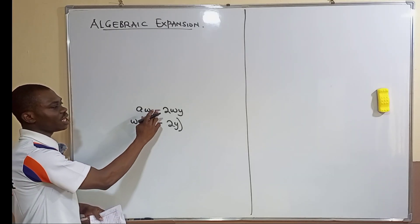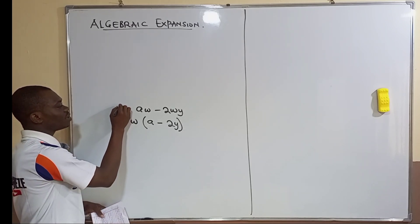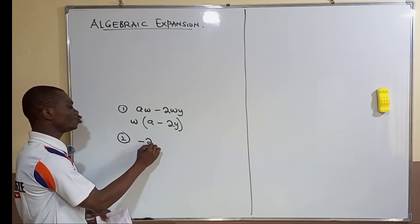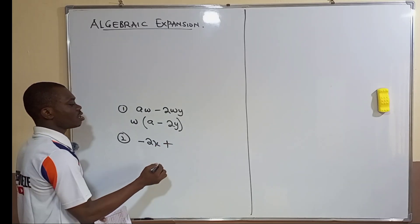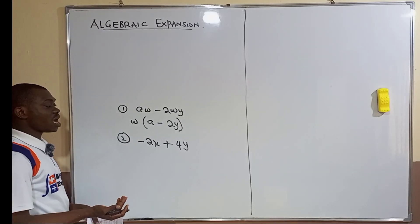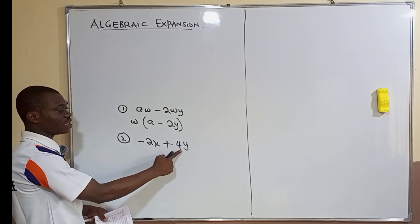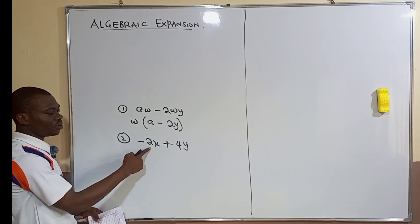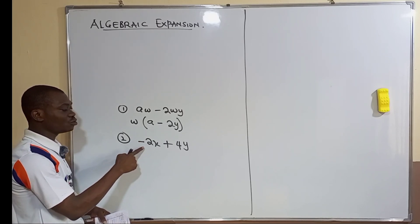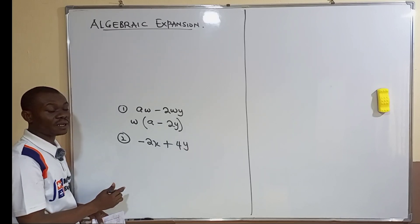Note that you bring down the sign because you're dividing by a positive common factor. Now consider another example: -2xc + 4y. Here, whether the sign is plus or minus doesn't affect identifying the common factor. You can see there is a two in both terms, but bringing out only two would be an incomplete factorization, because the minus sign in front can also divide through both monomials.